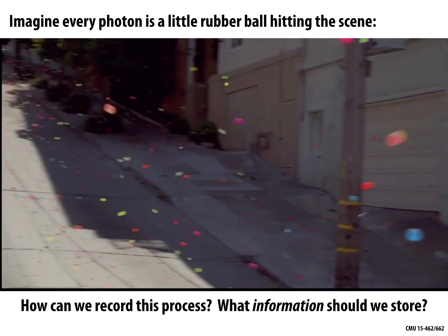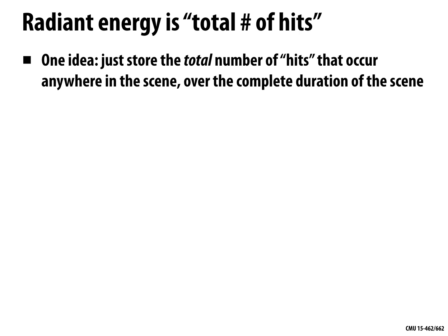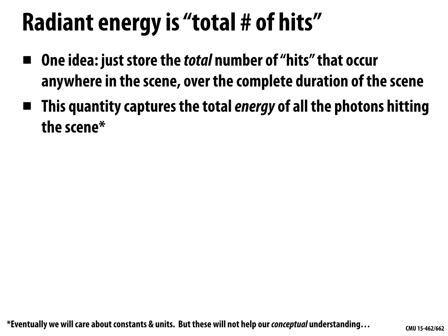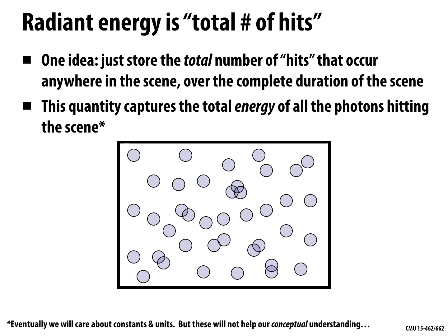Let's break this down into pieces. The first quantity is very simple: radiant energy. Radiant energy is nothing more than the total number of hits — the total number of times any photon hits any surface over the total duration of time, from the beginning of time to the end. So if we have photons hitting our scene, the radiant energy is just the total number of hits. In this illustration you could count 40 hits. That's all radiant energy is — just total number of photon hits.